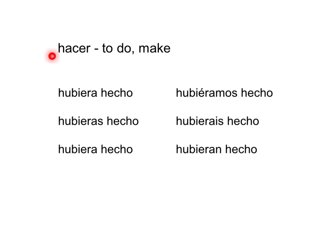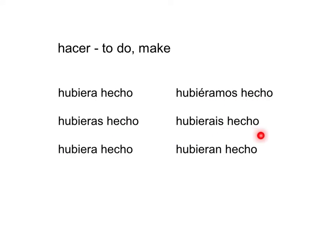Otro ejemplo con el verbo hacer, to do or to make. Hacer tiene un participio de pasado irregular: hecho. So: hubiera hecho, hubieras hecho, hubiera hecho, hubiéramos hecho, hubieras hecho, hubieran hecho.